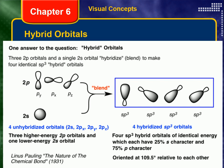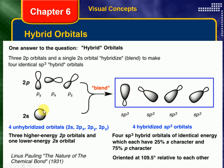Picturing this: we take three 2p orbitals — on the y-axis, x-axis, and z-axis — along with the 2s orbital, mix them all together and average them out, and we get four identical orbitals that look like a mixture of p and s. It's not 50/50 because three p's went in and only one s: three out of four is 75%. These sp3 hybrid orbitals show 75% p character and only 25% s character.